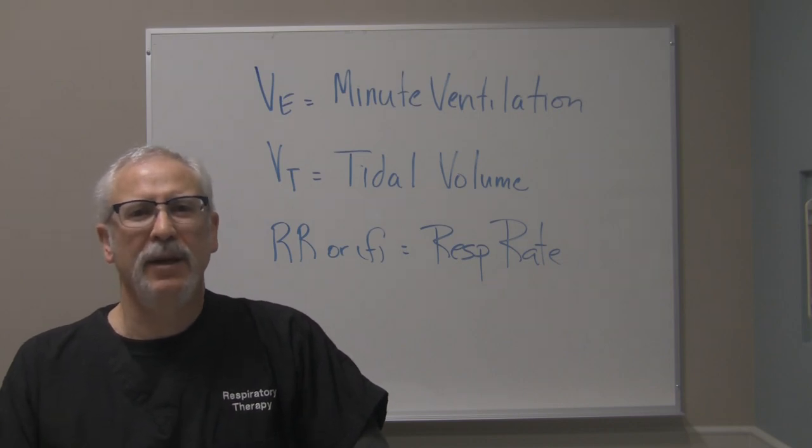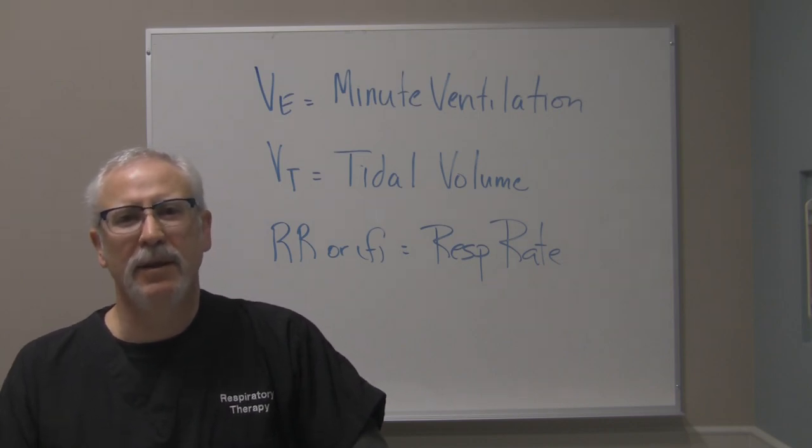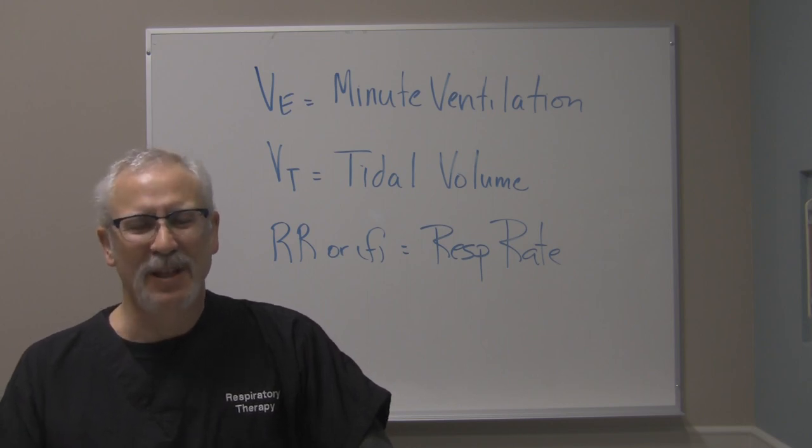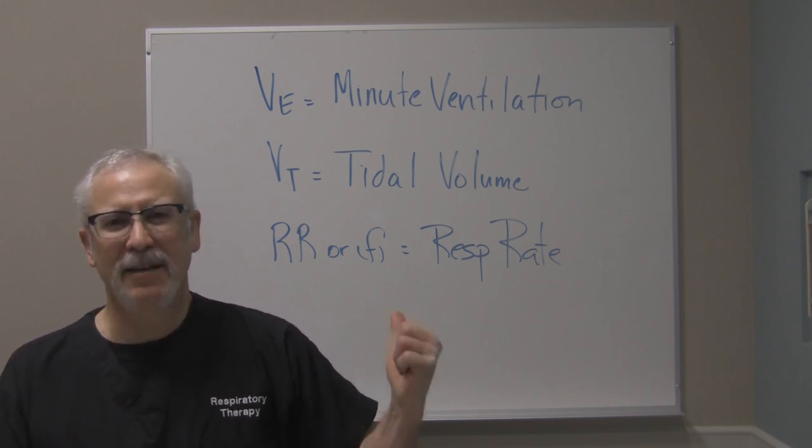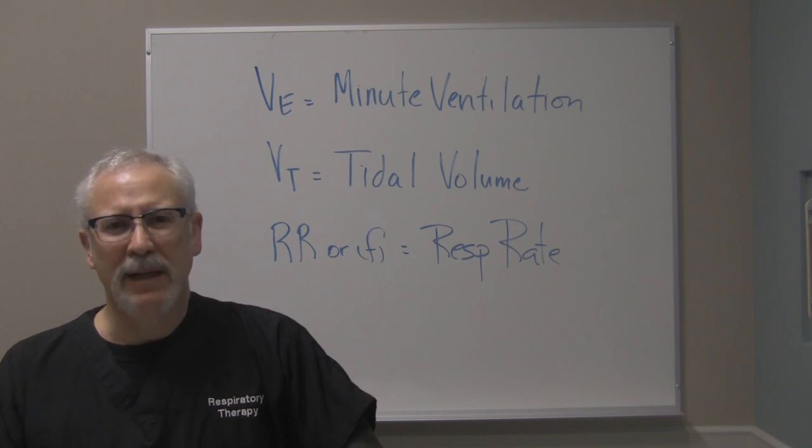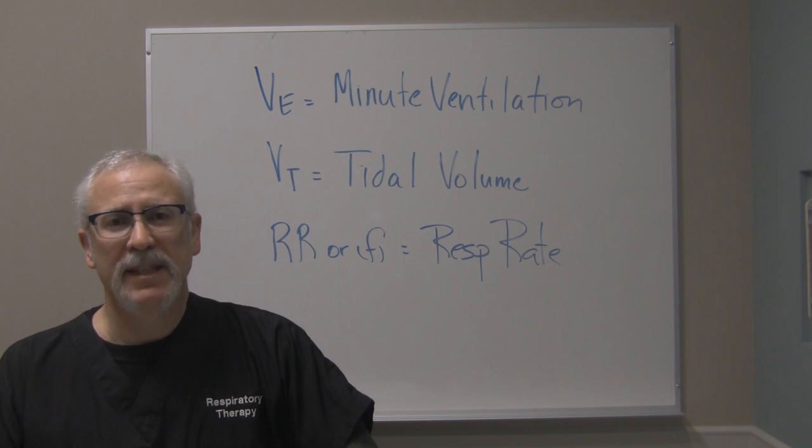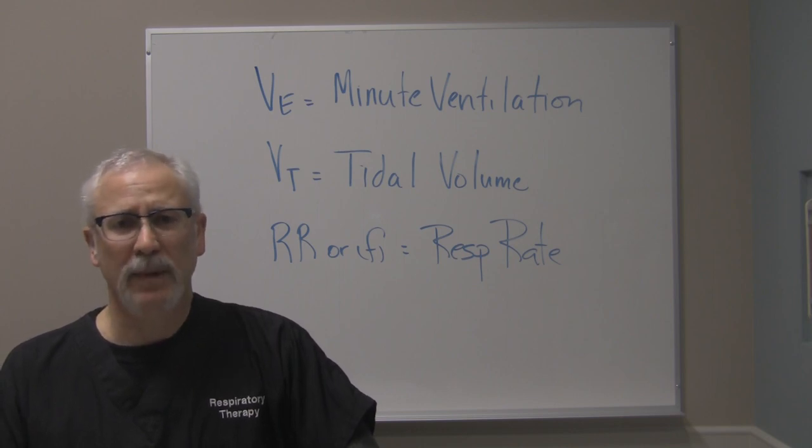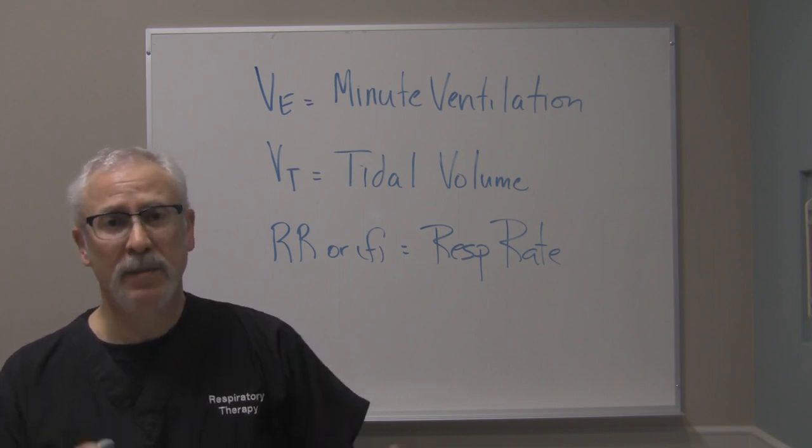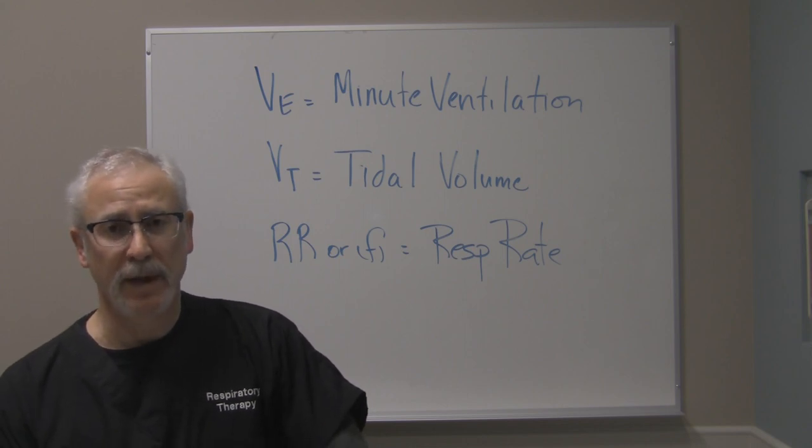Hi, George here again, and what I'd like to talk to you today about is the relationship of minute ventilation, tidal volume, and respiratory rate. As you can see on the whiteboard behind me, I've got VE, VT, and RR indicated. VE stands for minute ventilation, you might also hear it called minute volume. VT is tidal volume, and RR, or sometimes abbreviated F, is respiratory rate.